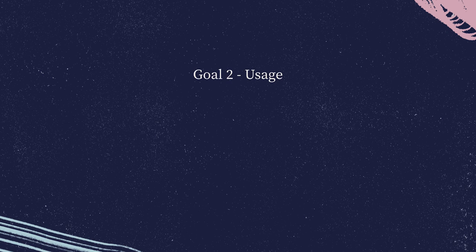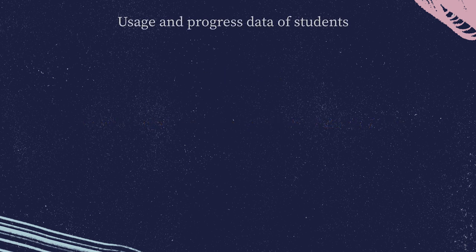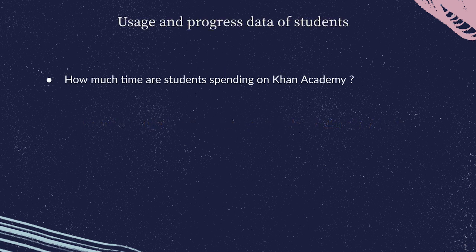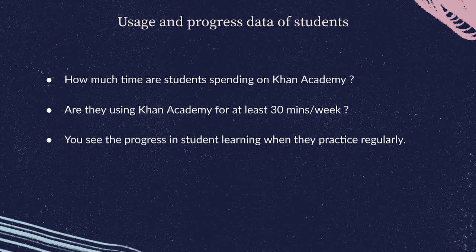After account creation, the second goal we discussed was ensuring that students use Khan Academy for at least 30 minutes per week. This can be tracked by reviewing usage data, which tells you how much time students are spending on Khan Academy and whether they are meeting the stipulated weekly time. Only when students use it regularly every week can you see progress in their learning.